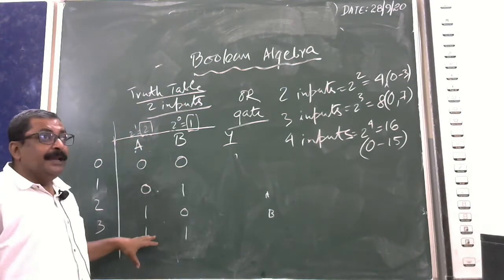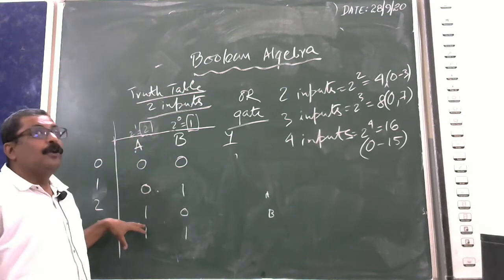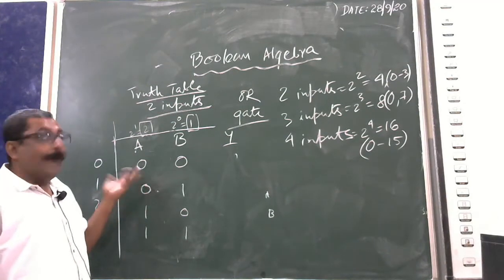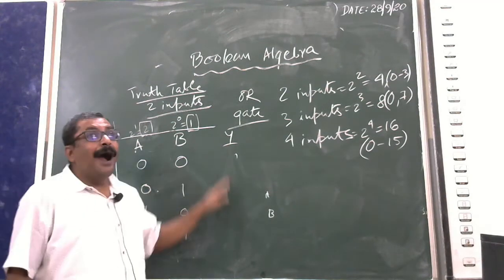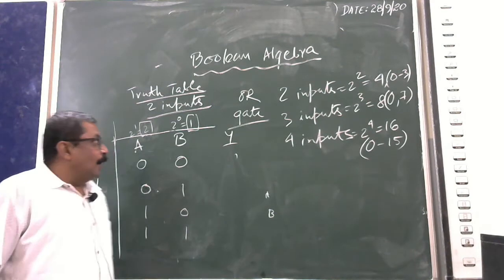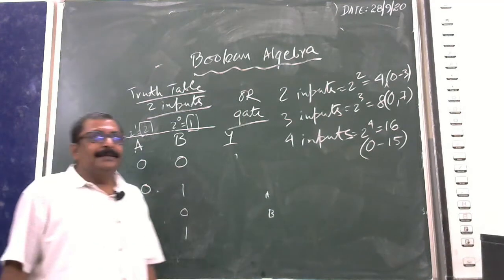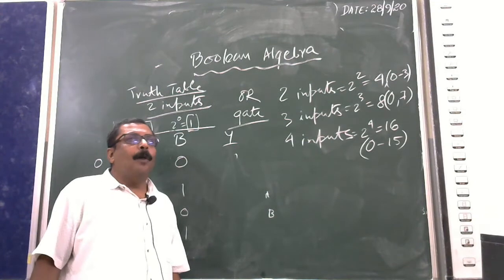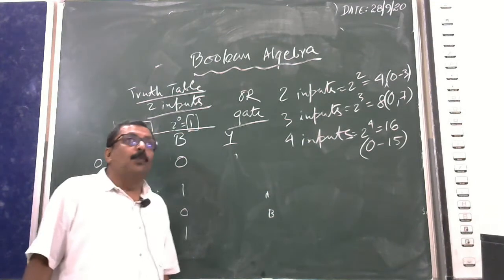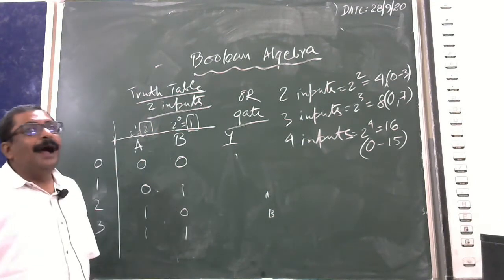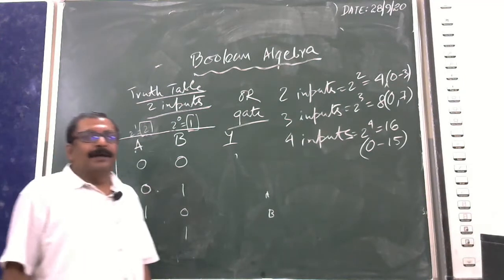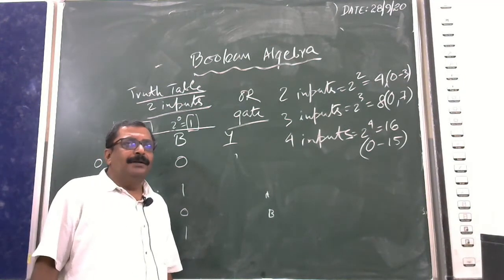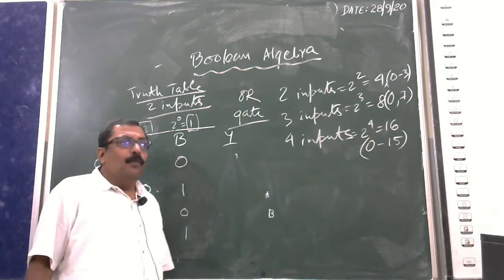For the OR gate: if any one of the inputs is 1, then the output will be 1. Any one of the inputs being 1 gives an output of 1.